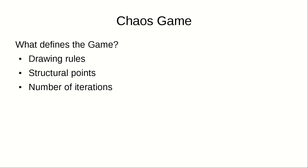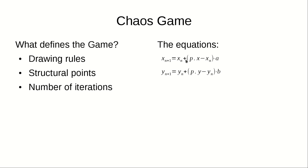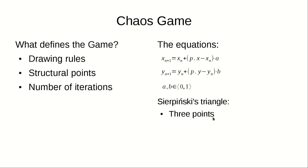In the simplest version of Chaos Game, we can describe the coordinates of the new point using the following formula. Here, n+1 means the new point, n means the current point, and p is the randomly chosen structural point we travel to. Constants a and b determine what fraction of the distance from the current point to the randomly chosen point we will travel — both must be in range from 0 to 1. Otherwise you will travel outside the fractal boundaries or never move. To draw Sierpinski's Triangle we need three points forming an equilateral triangle, and a and b both equal one half.